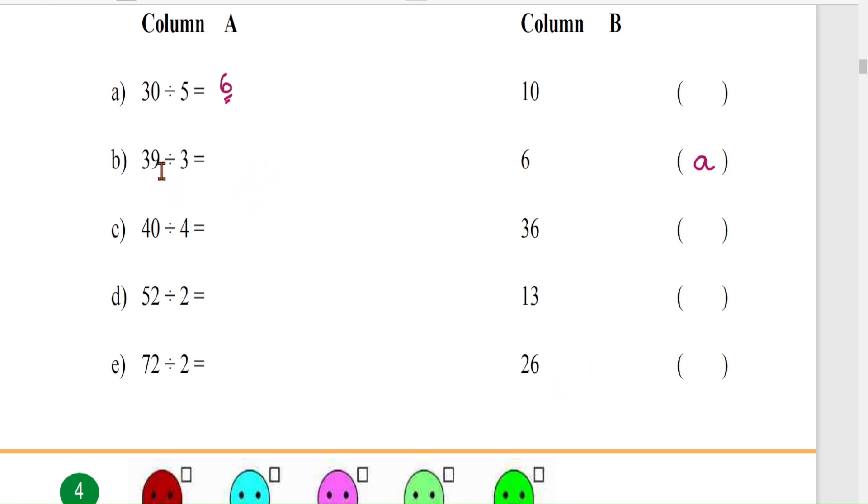Next, 39 divided by 3. In 39, let's take a look: 10 3's are 30, 11 3's are 33, 12 3's are 36, 13 3's are 39. So 39 divided by 3 is 13. That means 13 is the answer. Here the answer is B.